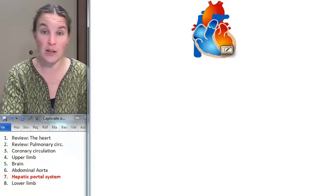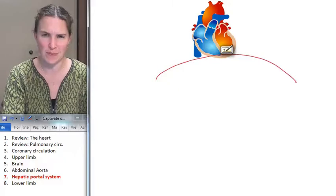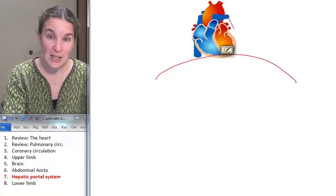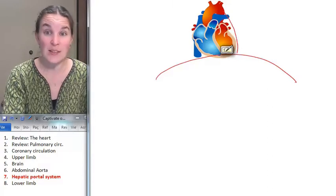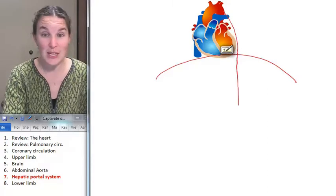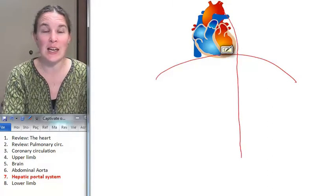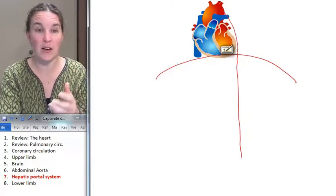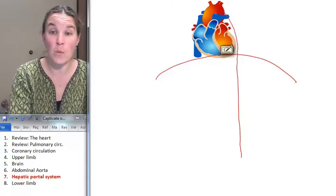Again, reviewing, coming from the heart, here is our diaphragm-ish. Our descending thoracic aorta enters the abdominal cavity and becomes the descending abdominal aorta. And there are a couple of branches of abdominal aorta that we want to keep track of.